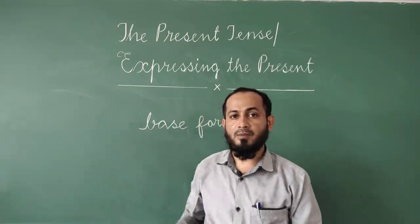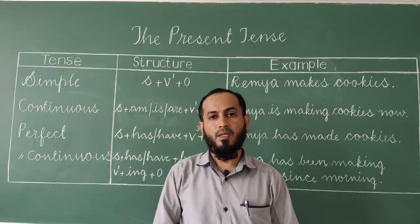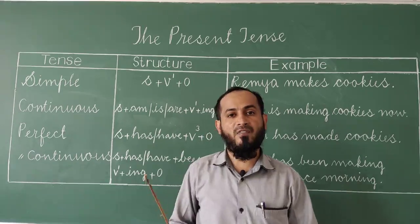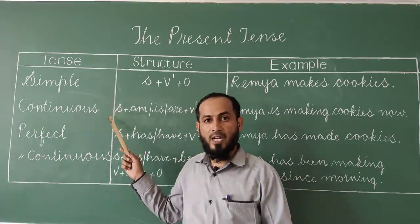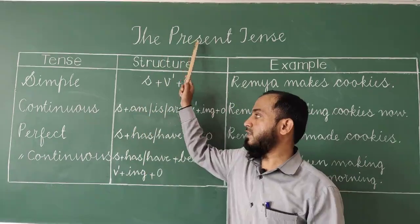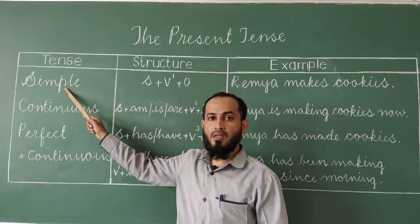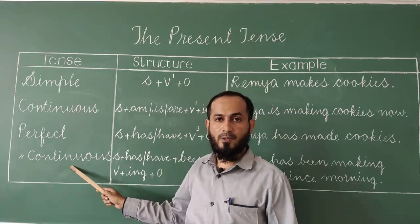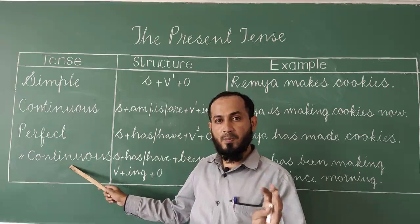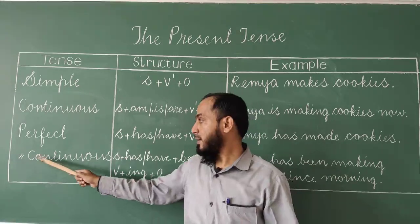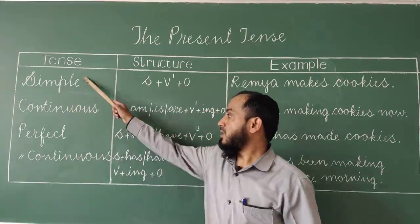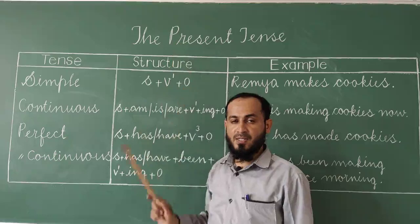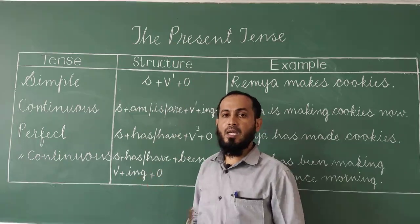Let me draw the table. As I have told you, present tense is divided into four different types, which I have mentioned in the table. Have a look at the board. The four different types are: simple, continuous, perfect, and perfect continuous. These are all four different types of present tense.